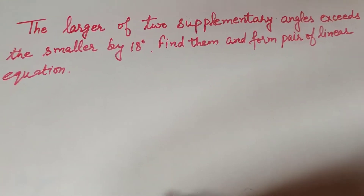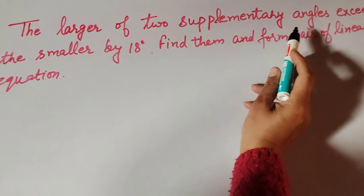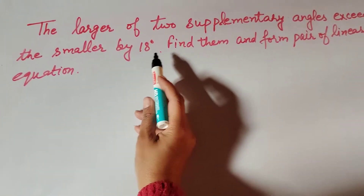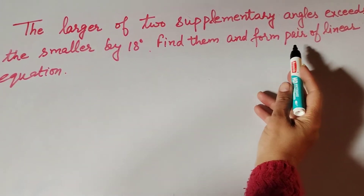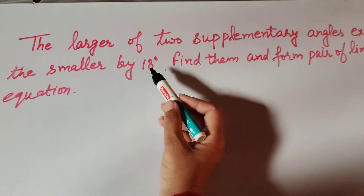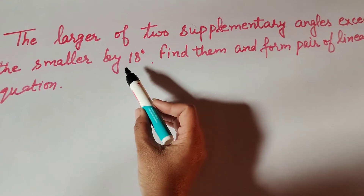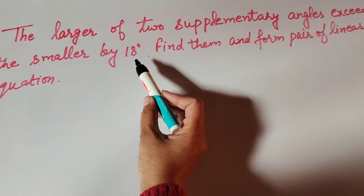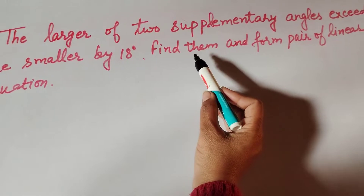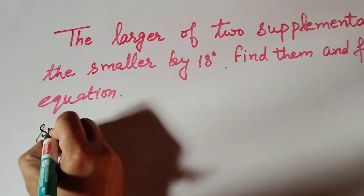Hello friends, welcome to my channel. In this video we discuss: the larger of two supplementary angles exceeds the smaller by 18 degrees — find them and form a pair of linear equations. In this question, the given information is that there are two supplementary angles, where one angle is 18 degrees greater than the other. We will form a pair of linear equations and then find the angles.